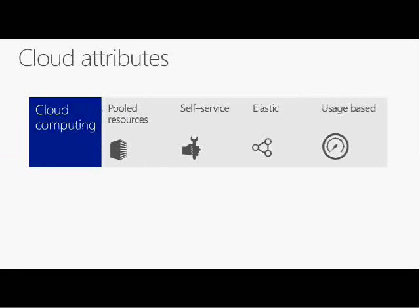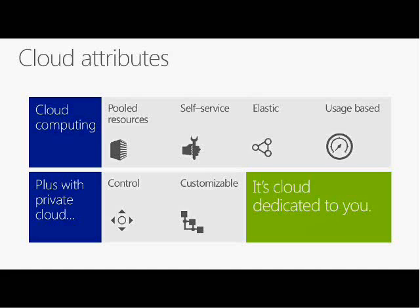One reason we call it a Cloud OS is that whenever you have four attributes in your organization provided by a service provider, you have a cloud computing environment. These attributes are: pooling of resources — getting more hardware without downtime; self-service — going to a web portal and requesting specific resources like a virtual machine; elasticity — being able to scale up and down, such as handling 5,000 users versus 10,000 users; and usage-based charging.